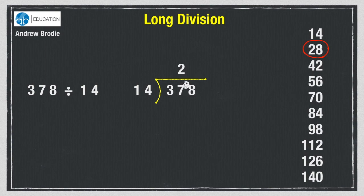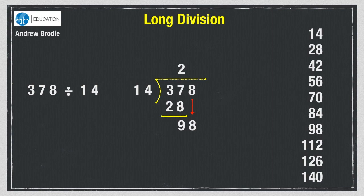In short division we write the nine next to the eight to show that we now have 98. But in long division, instead of doing that, we write the 28 we've used under the 37. Subtract 28 from 37 to get nine, then bring down the eight to join the nine — we've still got 98, but it's written in a different place. Now all we have to do is say how many 14s in 98, and we can see that there are seven because that's the seventh number down the list. So we write seven on the answer line. Our final answer is 27.